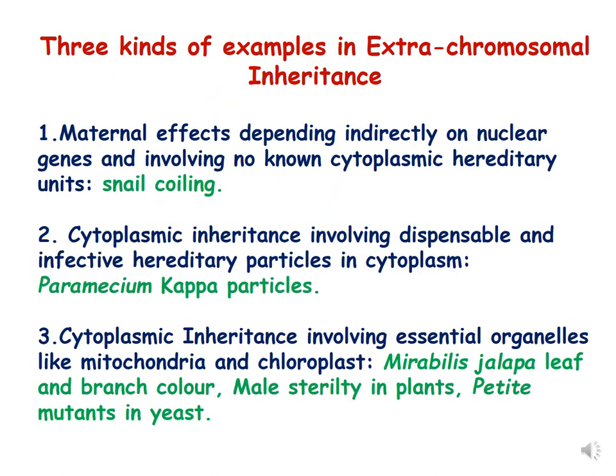There are three kinds of extrachromosomal inheritance. The first is maternal effect, which depends indirectly on nuclear genes and involves no cytoplasmic hereditary units — snail coiling is the example. The second is Paramecium kappa particles, which are cytoplasmic dispensable and infective hereditary particles, to be discussed in the third lecture. The third includes cytoplasmic inheritance due to organellar genomes — mitochondrial and chloroplast — including Mirabilis jalapa leaf color, male sterility in plants, and petite mutants in yeast.